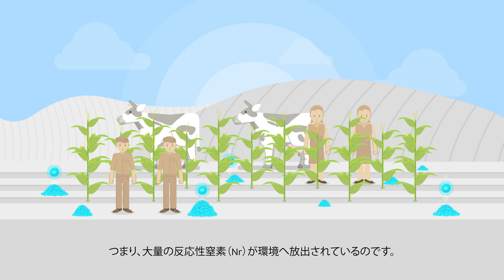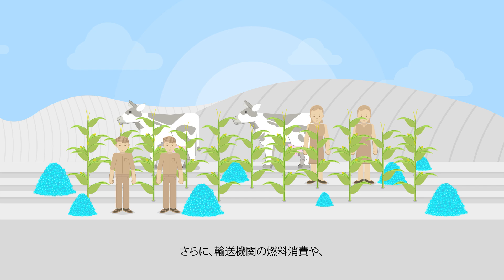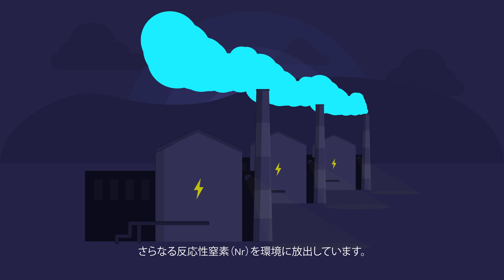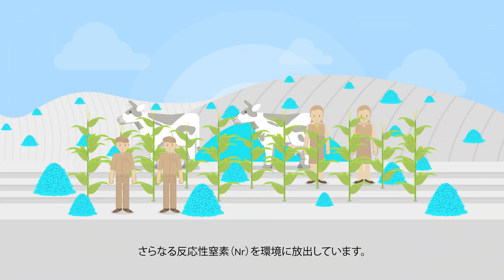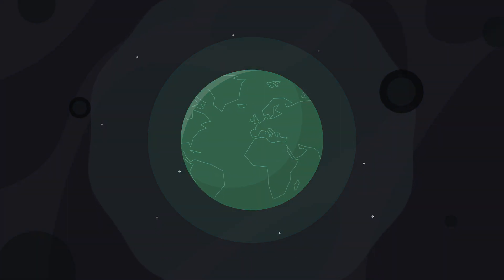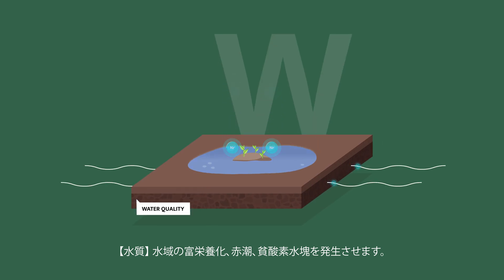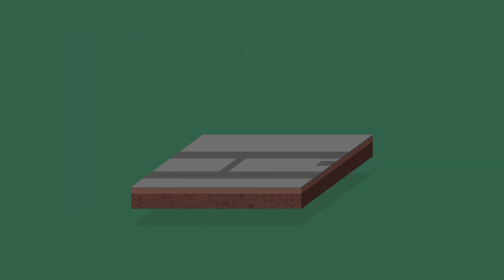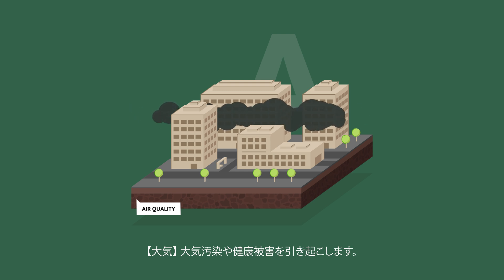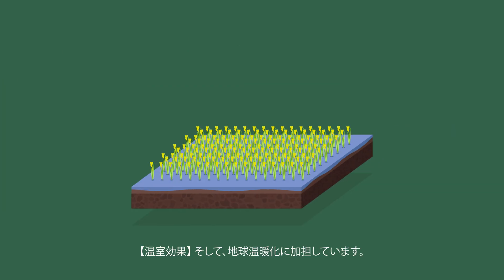Thus, a large amount of reactive nitrogen is lost into the environment. Moreover, combustion in transports and in energy production puts further reactive nitrogen into the environment, causing environmental impacts. In the atmosphere, it creates air pollution and health problems and contributes to greenhouse gases.